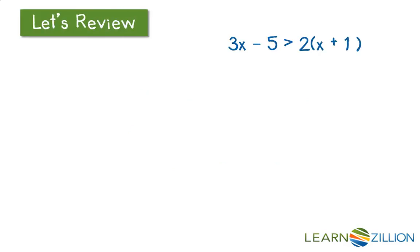First, let's review how to solve an inequality. If we have an inequality like this, 3x - 5 > 2(x + 1), our first step is to get rid of the parentheses. We need to distribute that 2 into the x plus 1.